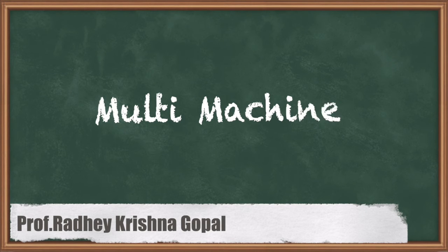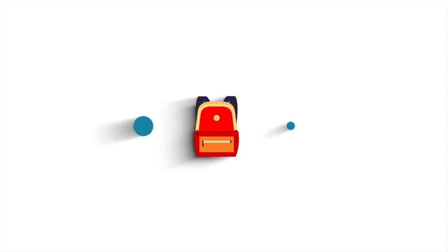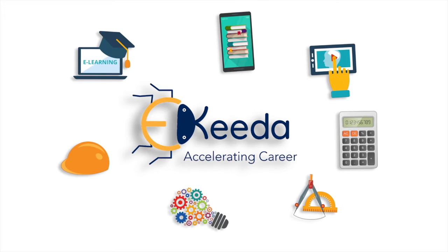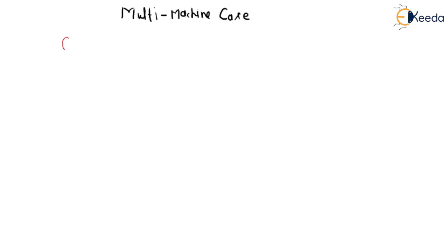Hello friends, now we are going to study the multi-machine case. Let us assume we have one generating power station. At that station we have many generators operating in parallel having different inertia constants H1, H2, H3 and machine ratings G1, G2, and G3. This is your transformer, this is your transmission line, and this is another transformer, and this is your infinite bus.